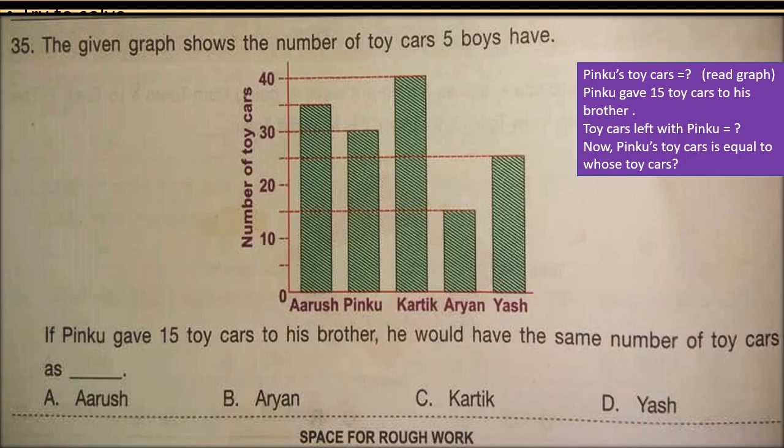Question number 35: The given graph shows the number of toy cars five boys have. The five boys are Arush, Pinku, Karthik, Aryan, and Yash. If Pinku gave 15 toy cars to his brother, he would have the same number of toy cars as which boy? First see how many toy cars Pinku has, then subtract 15, and check which boy has the same number of cars.